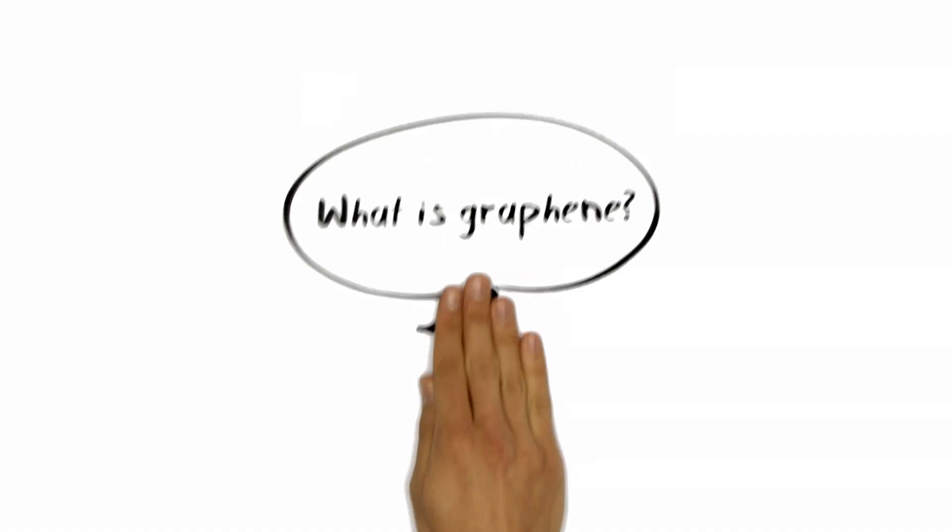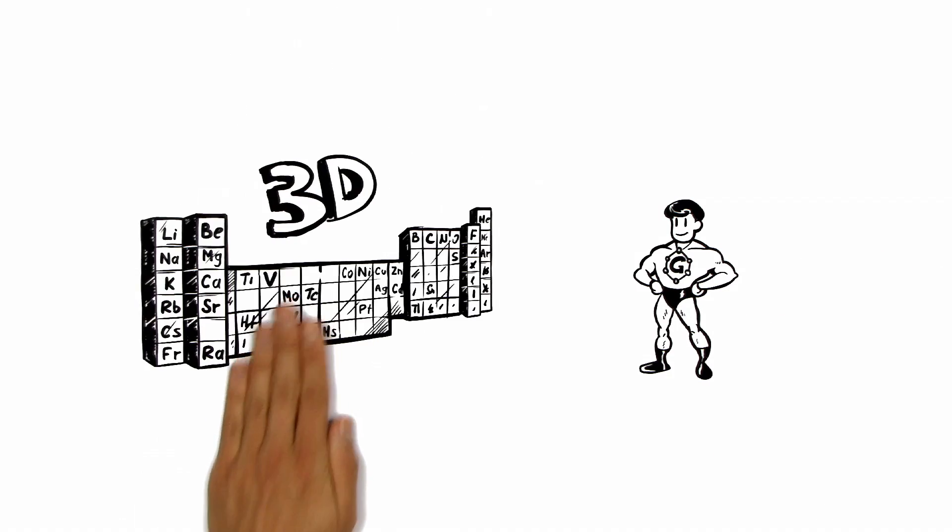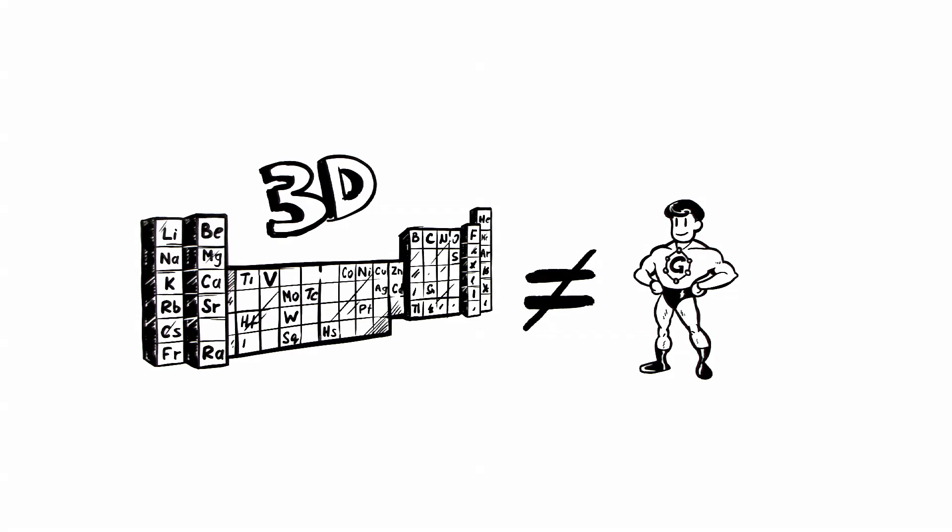The Simple Show explains graphene. This is graphene. Let's call him Mr. G. He is the first material that is two-dimensional. This gives him a unique set of properties.